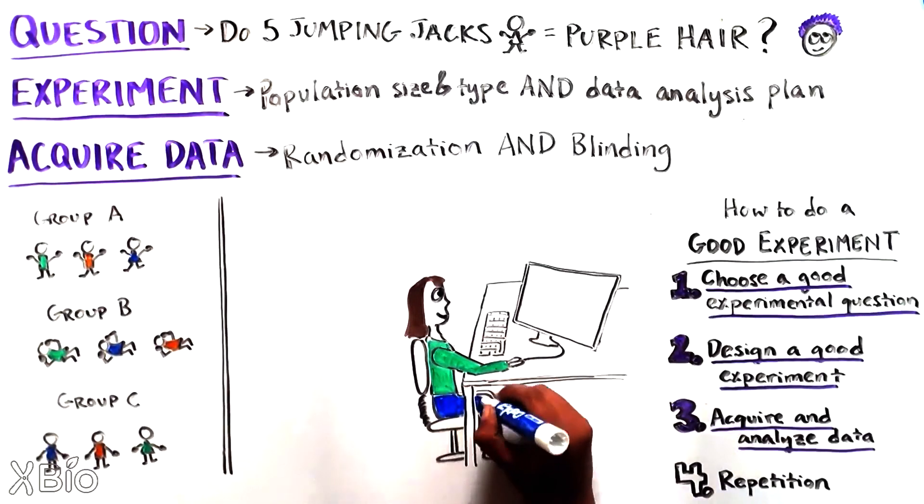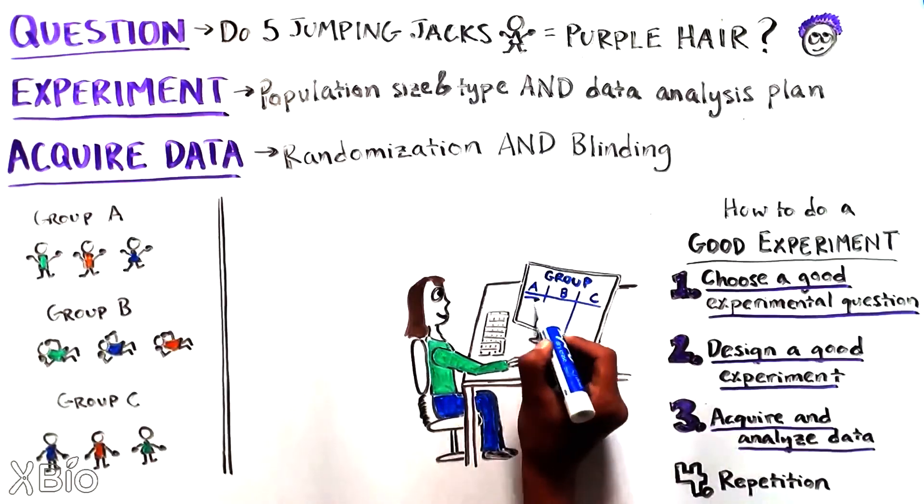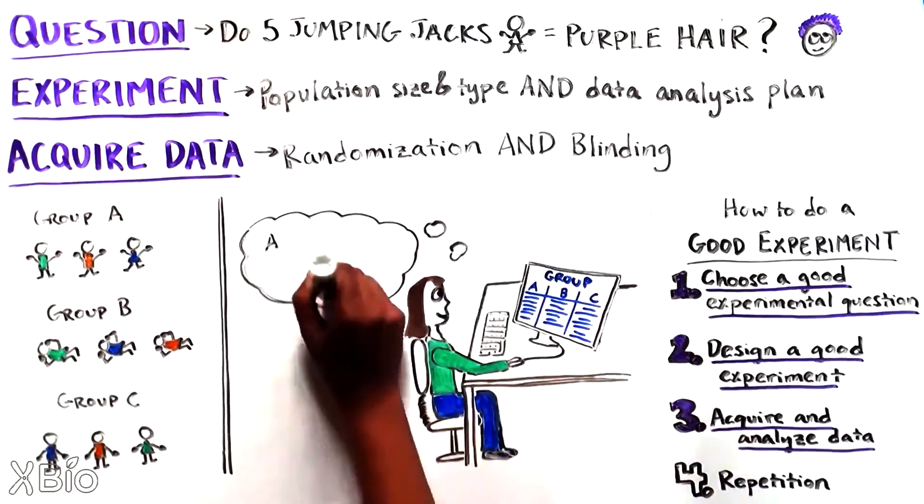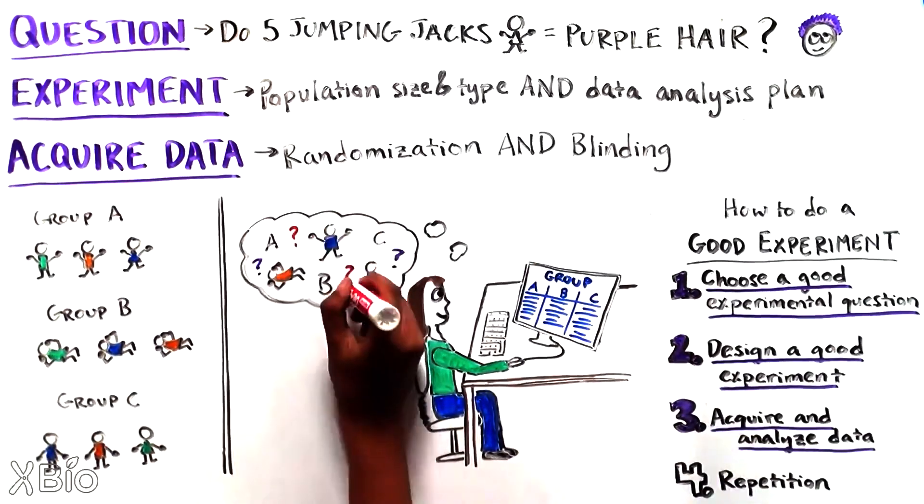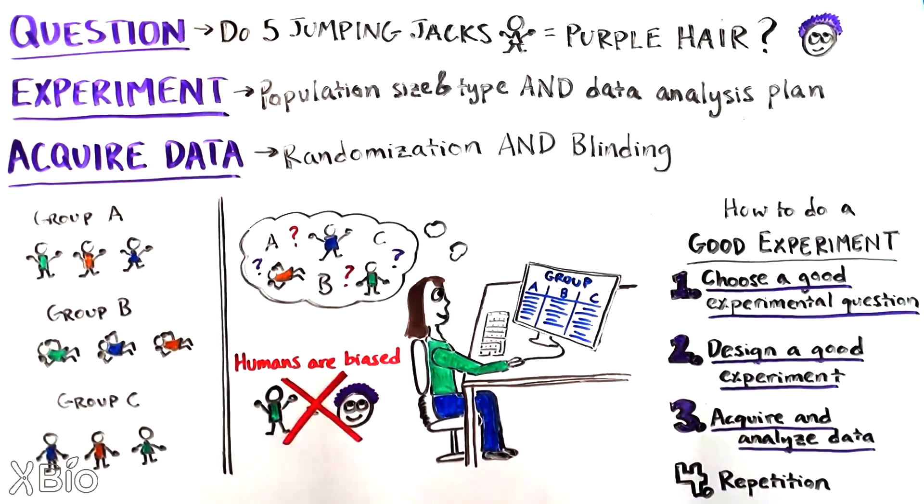Humans are very susceptible to bias, conscious or unconscious. So if the experimenters know which group is doing which exercise, they might assess the final hair color of the people in the jumping jacks group as more purple, even if it is not.